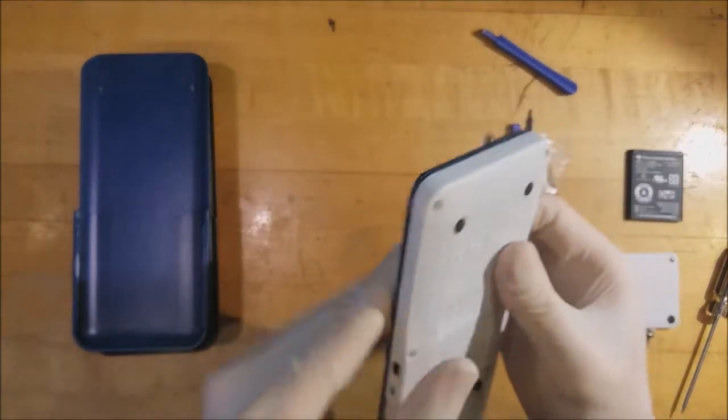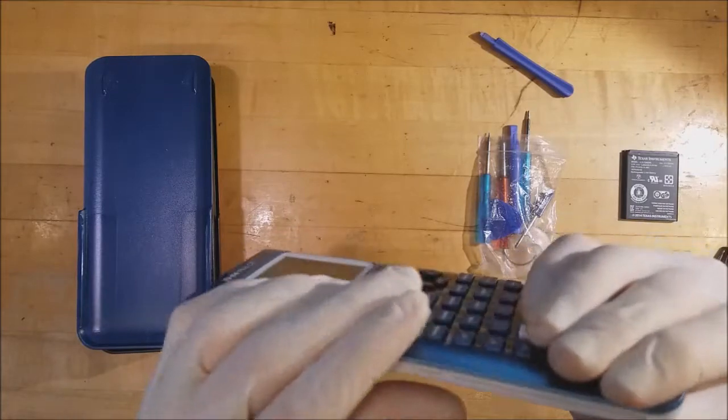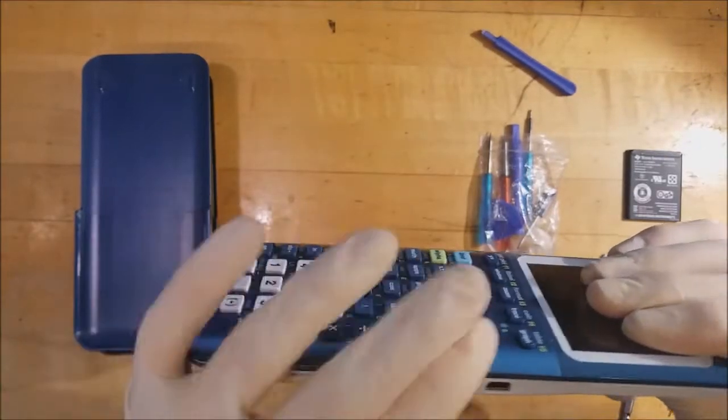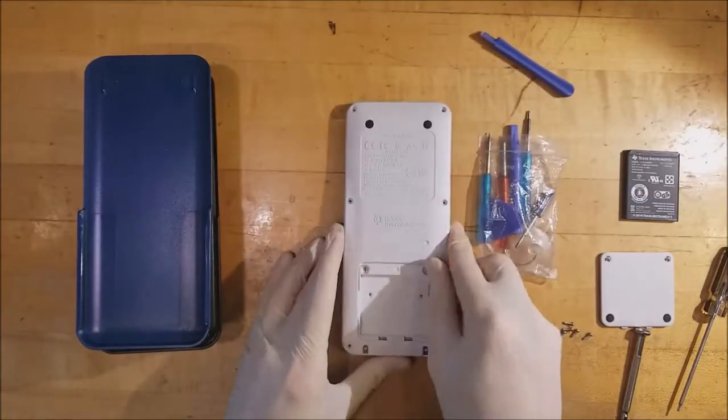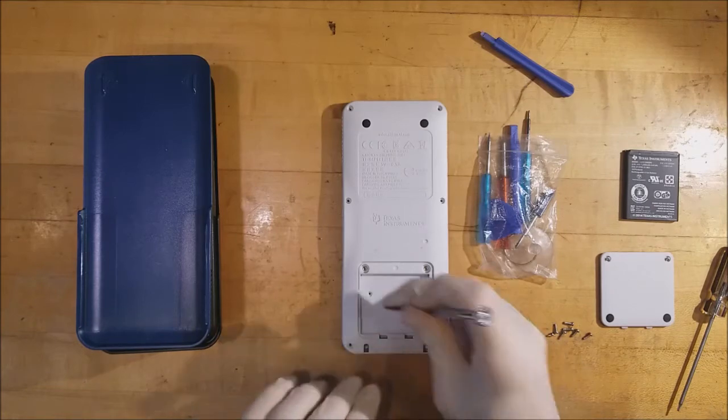First, snap the cover on, and those little plastic latches will engage. I'll go all around the edges to make sure I get that firmly on. We can now reverse the disassembly process in order to put it back together. We'll start with those two small Phillips screws that go underneath the battery.